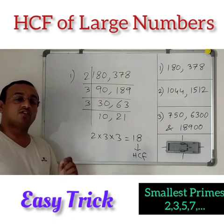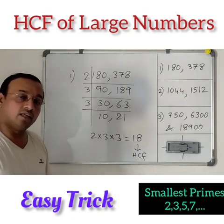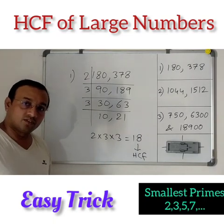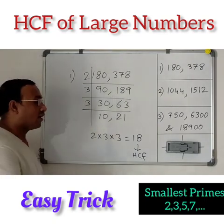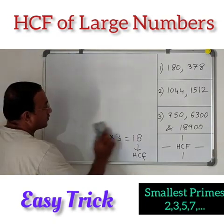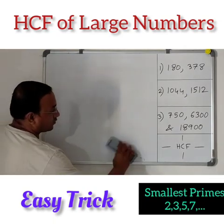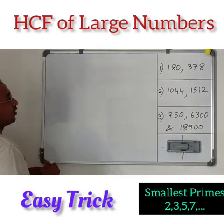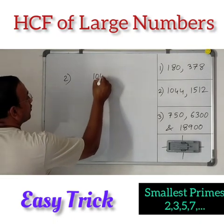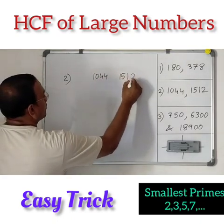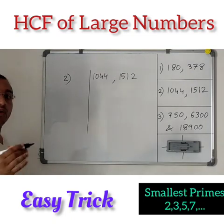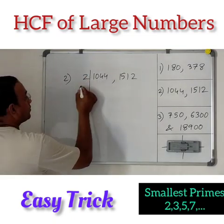In this way, using your smallest primes you can get the HCF of large numbers. So let's go to the second example. We have 1044 and 1512. Both are even, so we can start with the smallest prime, which is 2.